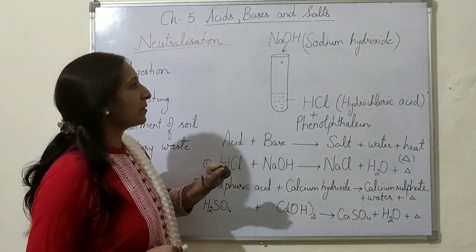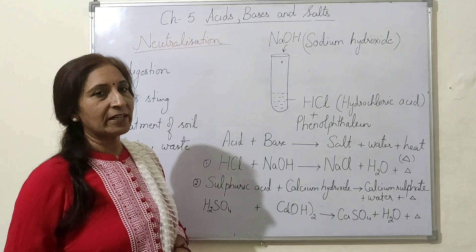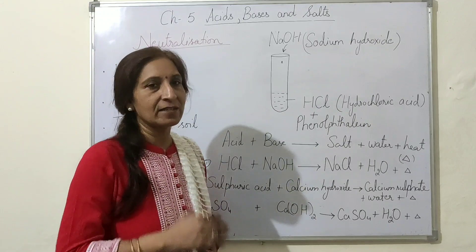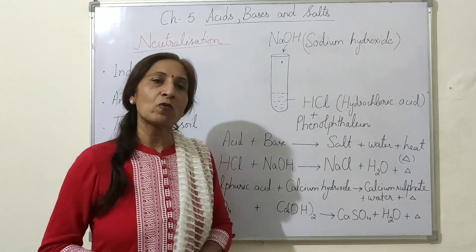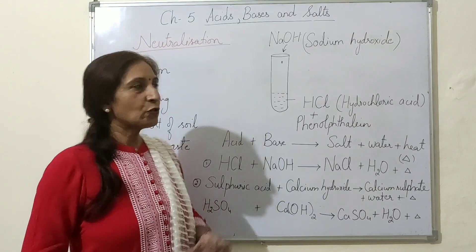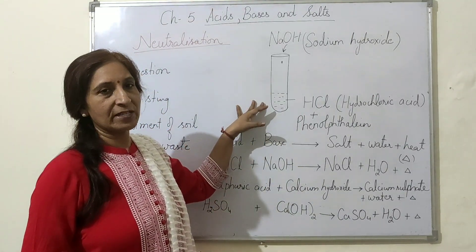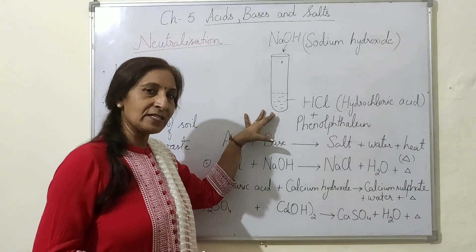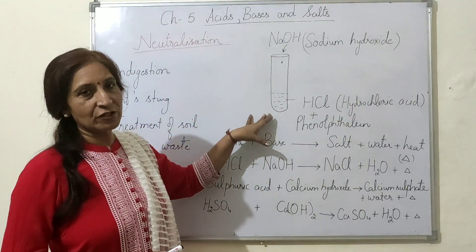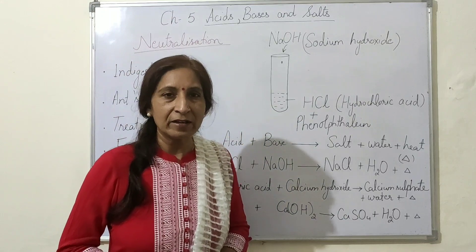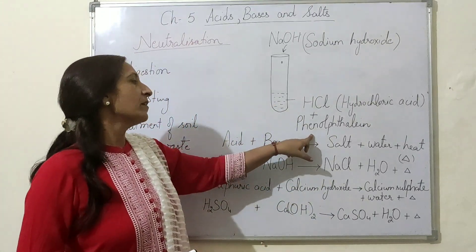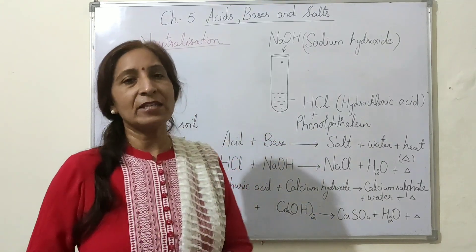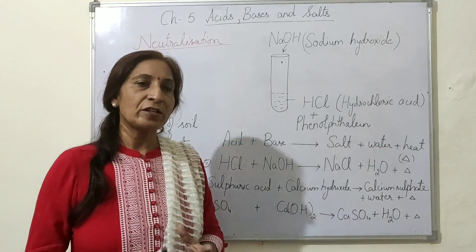What actually happened: when we were adding sodium hydroxide — the base — into it, the acid was cancelling the effect of NaOH, or the acid was neutralizing the base. At the same time, the base was also neutralizing the acid. When we added more and more sodium hydroxide, it also neutralized the acid, and when the whole acid got neutralized, the base showed its effect and we could see that pink color as the base came in contact with the phenolphthalein indicator. This is a neutralization reaction.